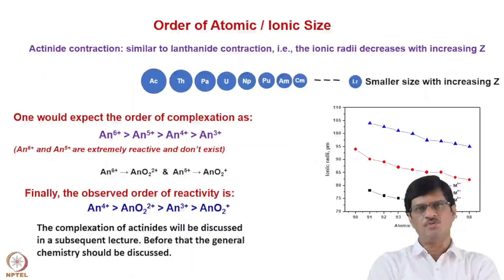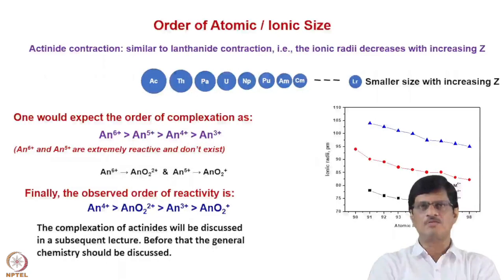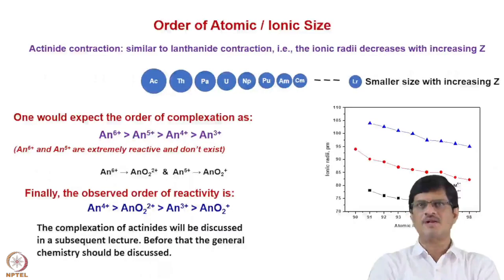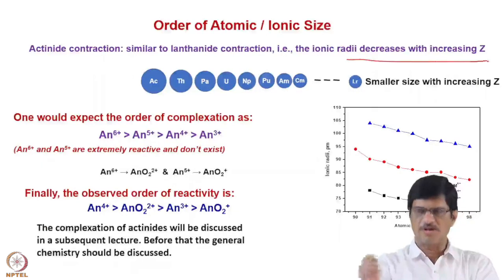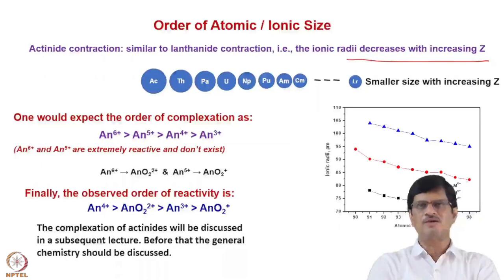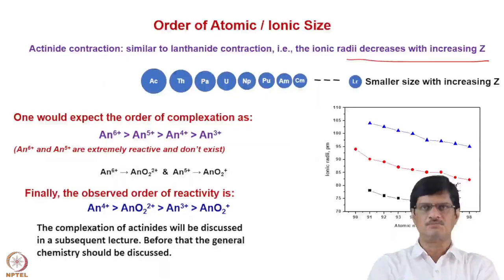Actinides range from actinium to lawrencium. For a particular ionic species, say the plus 3 oxidation state, the size of the actinides changes across the series — this phenomenon is called actinide contraction, where the ionic radii decrease with increasing atomic number of the actinide ions. This is similar to lanthanide contraction and has great significance in complexation. The heavier actinide will form a stronger complex compared to the lighter actinide, which will be discussed in the subsequent part of this lecture.